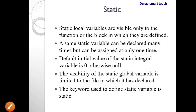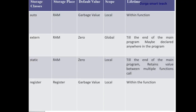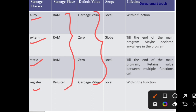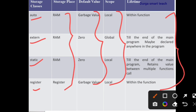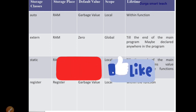There are four types of storage classes, and this topic is very important. These are automatic, external, static, and register. For automatic variables we use 'auto', for external we use the 'extern' keyword, for static we use 'static', and for register we use 'register'. These define where the variable values can be stored, their default values if not initialized, their scope — either local or global — and the lifetime of the variables, which may be within the function or throughout the program. I hope it is clear. If you have any doubts, please comment in the comment section. For more videos, please subscribe to my channel. Thank you.